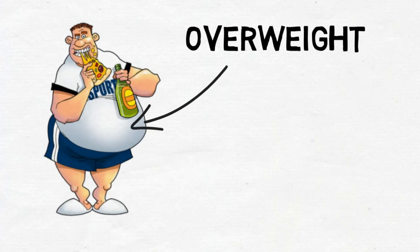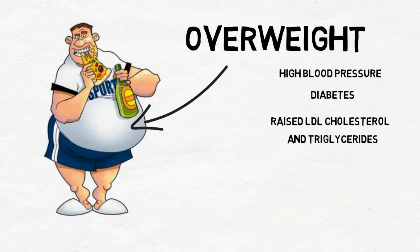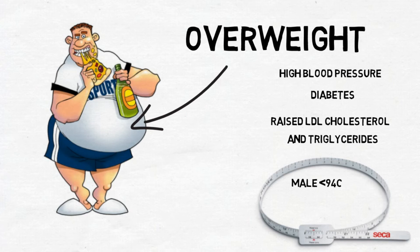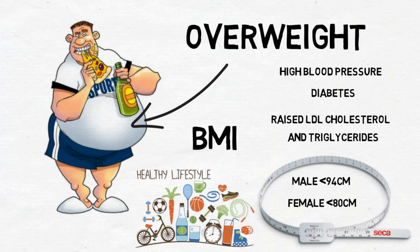Being overweight, especially carrying excess weight around the abdomen, is not just a risk for your heart including high blood pressure, but also increases your risk of diabetes. Being overweight can also contribute to raised LDL or bad cholesterol and triglyceride levels. The Heart Foundation recommends you aim for a waist circumference less than 94 centimeters for men and 80 centimeters for women. Calculating your body mass index or BMI, which takes into account your weight and height, can also be used to assess your risk. Healthy eating and exercise are two important ways to achieve and maintain a healthy weight.